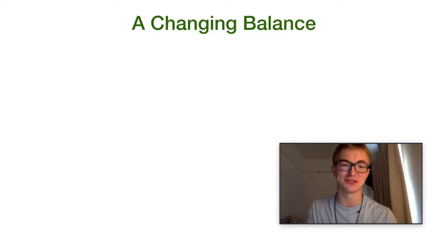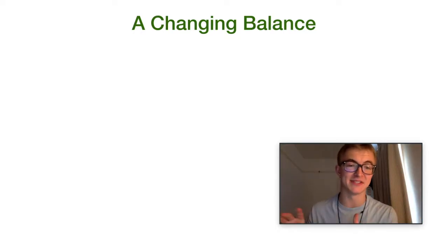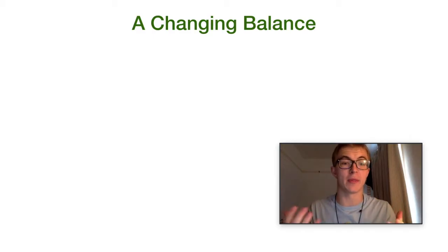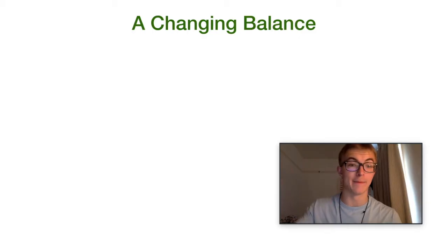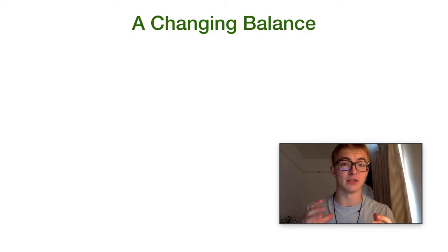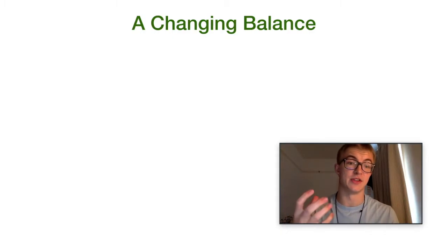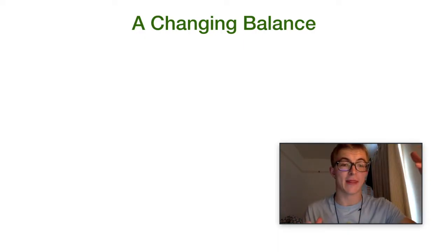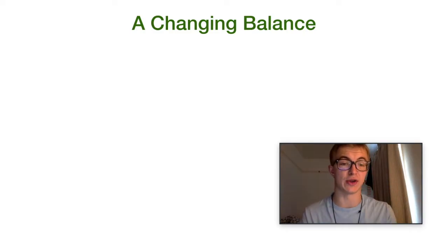Hi guys, Liam here with the second part of my introduction to global climate change as part of the IB geography course. If you haven't seen the first video, I encourage you to check that out. We gave an overview of what the atmospheric system is, what the energy balance is, and what some of the factors are that might affect solar insolation — that's energy coming from the sun into the earth's atmosphere. The energy balance is the balance between solar radiation coming into the earth versus the longwave radiation that is sometimes trapped by greenhouse gases, leading to the greenhouse effect.